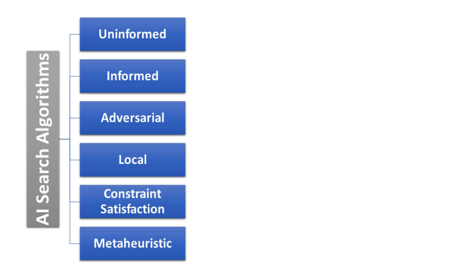Let's dive into the major types of AI search algorithms, each tailored to different types of problems. They include uninformed search, informed search, adversarial search, local search, constraint satisfaction search, and meta-heuristic search.